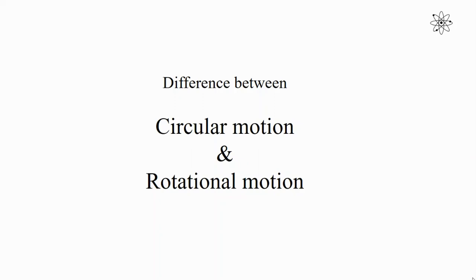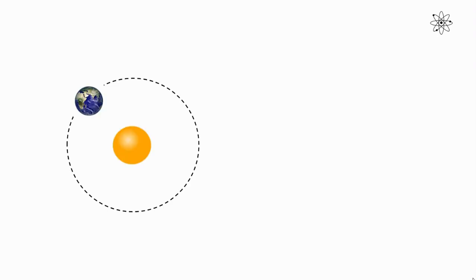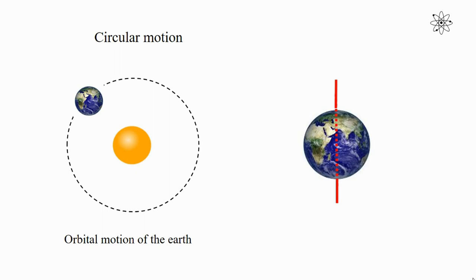Hello students and welcome back. Today we are going to discuss the difference between circular motion and rotational motion. I am going to consider the orbital motion of the earth as an example of circular motion, and the spinning motion of the earth as an example of rotational motion.